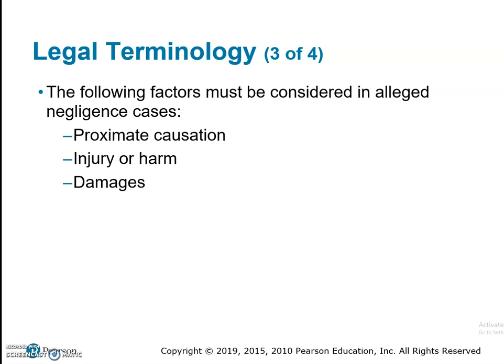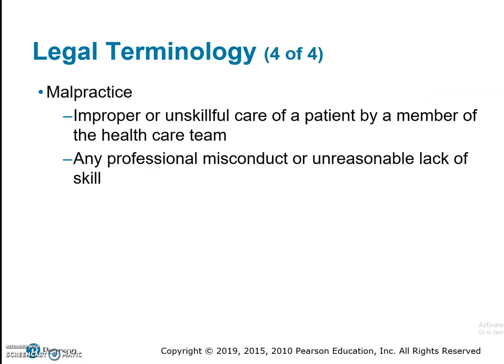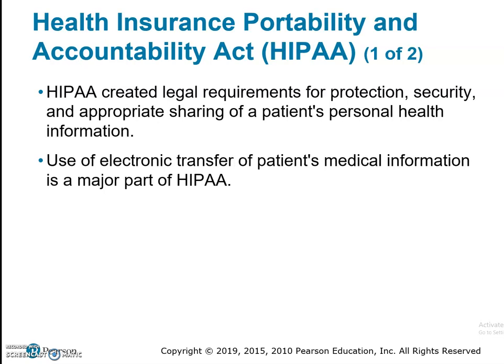Additional factors in a negligence case include proximate causation, injury or harm, and damages. Proximate causation means recognizing there is a cause to our actions. For example, probing in the arm could cause a patient to lose feeling. Damages would apply if the patient lost capability in that arm and could no longer perform their job. Malpractice is the improper or unskillful care of a patient by a member of the healthcare team — for instance, a physician performing surgery on the wrong arm.